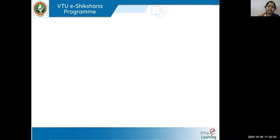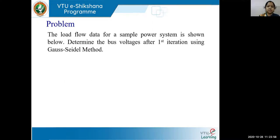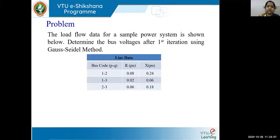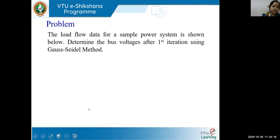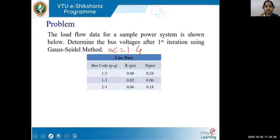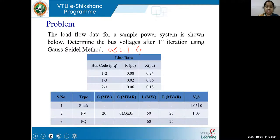Let us understand the concept of this acceleration factor with the help of one problem. The load flow data for a sample power system is shown below. Determine the bus voltage after the first iteration using Gauss-Seidel method. We'll do this problem by taking alpha value as 1.4. Here is your line data and bus data given. Line data will help you to draw the network as well as to form the Y bus.